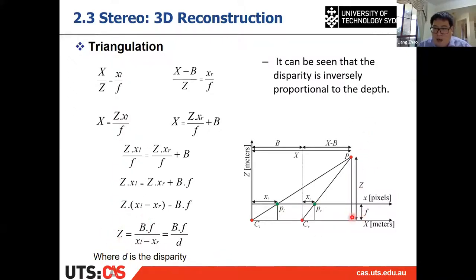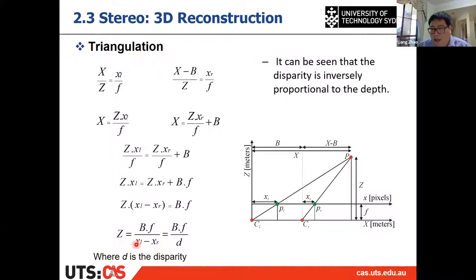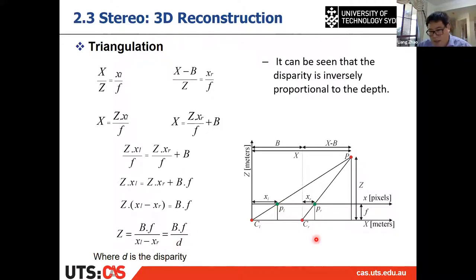The capital Z equals baseline times f (the focal length) divided by (xL minus xR). And if you remember, xL minus xR is the pixel difference between the two images — that is the disparity. So the depth equals baseline times focal length divided by disparity.